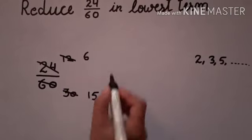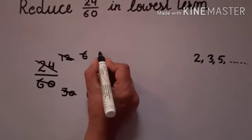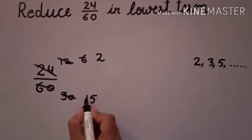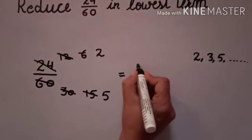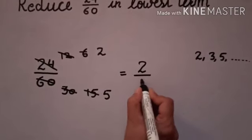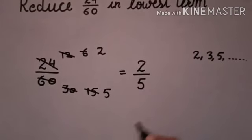2 doesn't work anymore, so we divide by 3. 3 times 2 is 6, and 3 times 5 is 15. So the required answer is 2 upon 5.